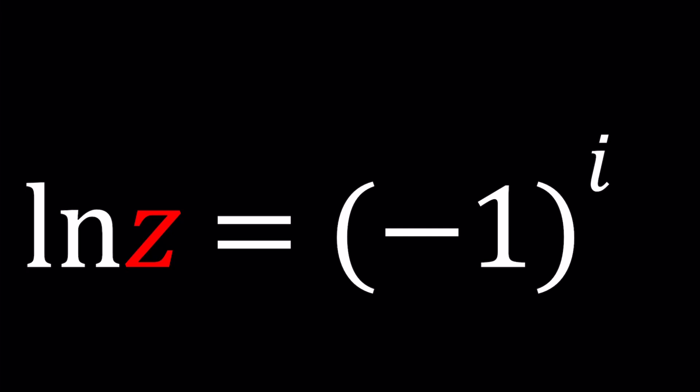We have ln, the natural log of z, which is a complex number, equaling negative 1 to the power i. So we have a really interesting scenario here because we have a negative base and an imaginary exponent, which makes it real crazy.